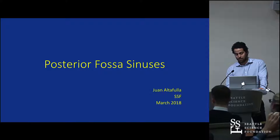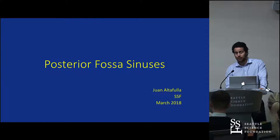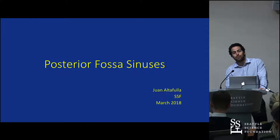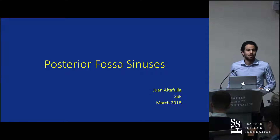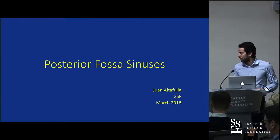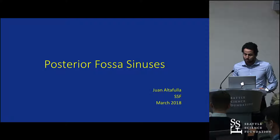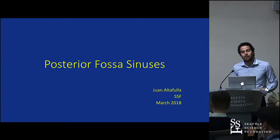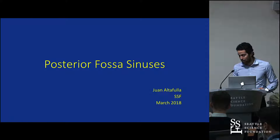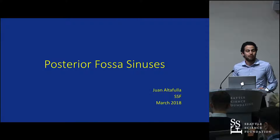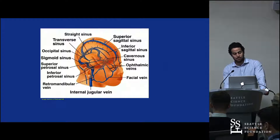Why is this important? Mainly, besides being an important source of bleeding, the major sinuses of the human skull are also important to know in terms of their anatomical location for placing burr holes during neurosurgical procedures.